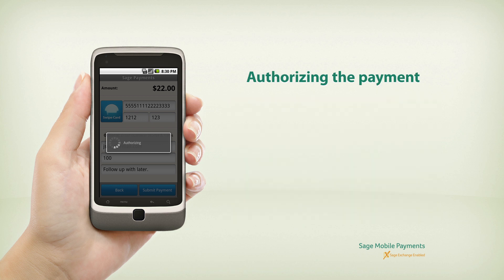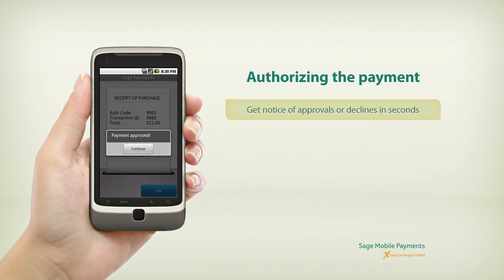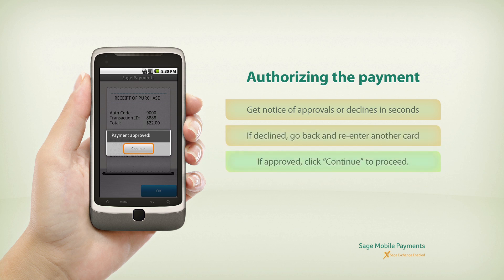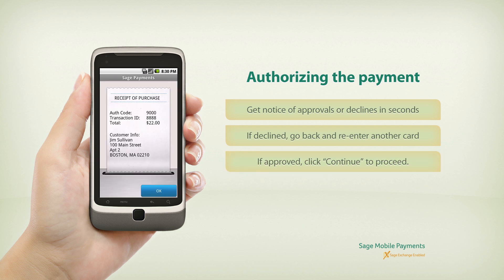Now we can authorize the payment. You can get notice of approvals or declines in seconds. If declined, just go back and re-enter another card. If approved, click Continue to proceed.